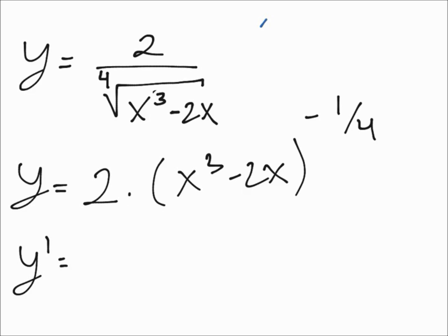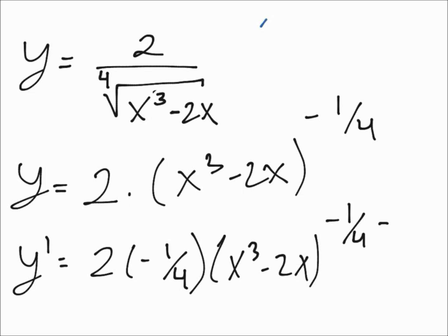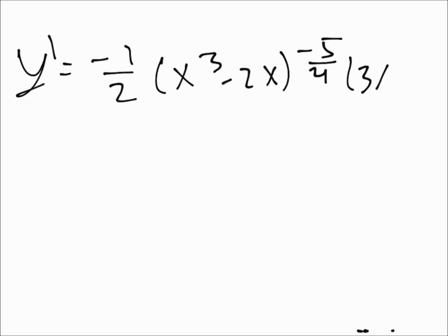Using the power rule, that's going to be 2 times negative one-fourth, bringing the power down as negative one, times x cubed minus 2x to the negative one-fourth minus one, times the derivative of the inner function which is 3x squared minus 2. Simplifying the 2 and one-fourth gives negative one-half, so we have negative one-half times x cubed minus 2x to the negative five-fourths, times 3x squared minus 2.